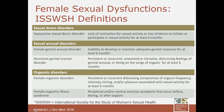Orgasmic disorders include female orgasmic disorder — persistent or recurrent distressing compromise of orgasm frequency, intensity, timing, or pleasure associated with sexual activity — versus female orgasmic illness syndrome, which involves peripheral and/or central aversive symptoms that occur before, during, or after orgasm. The etiology of these can differ, and you will want to get into the details of the orgasmic experience with the patient to figure out how best to define and address it.